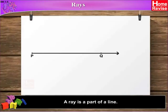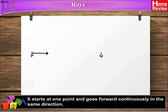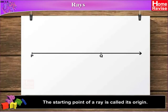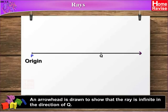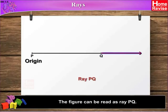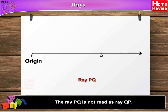A ray is a part of a line. It starts at one point and goes forward continuously in the same direction. The starting point of a ray is called its origin. Here, P is the origin. An arrowhead is drawn to show that the ray is infinite in the direction of Q. The figure can be read as ray PQ. The ray PQ is not read as ray QP.